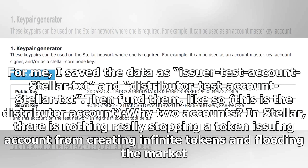Make sure you clearly label one as issuer and one as distributor. For me, I saved the data as 'issuer test account Stellar.txt' and 'distributor test account Stellar.txt', then fund them, like so. This is the distributor account. Why two accounts? In Stellar, there is nothing really stopping a token issuing account from creating infinite tokens and flooding the market.